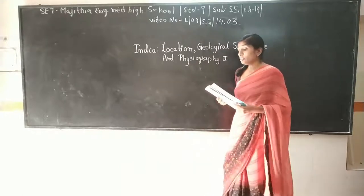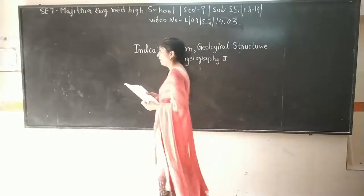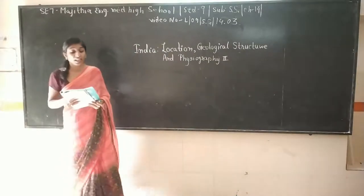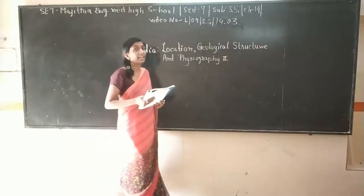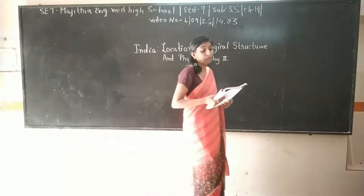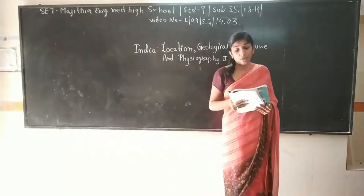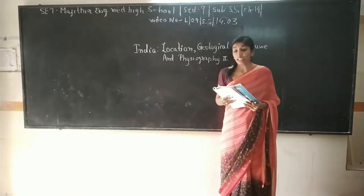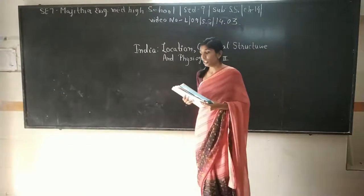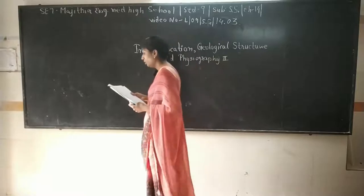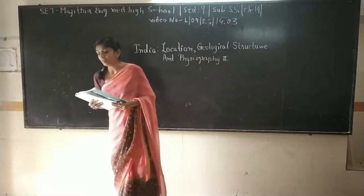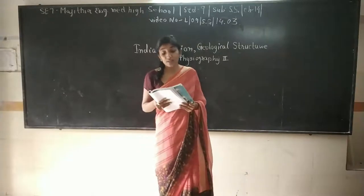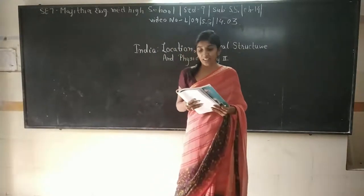Black soil is found mostly in Maharashtra, Madhya Pradesh, Gujarat, Karnataka, Andhra Pradesh, Telangana. This soil is very sticky and important. It can retain humidity for a long time. It is formed from igneous rock and is very useful for cotton cultivation.